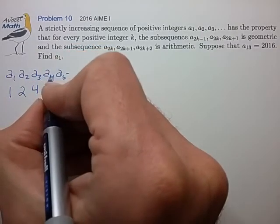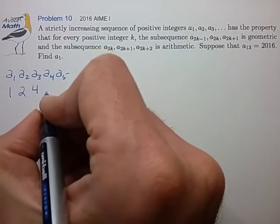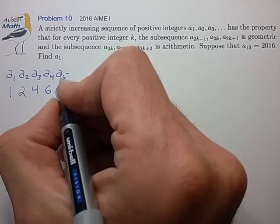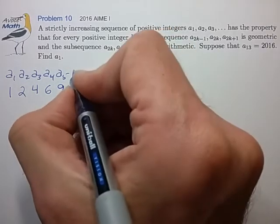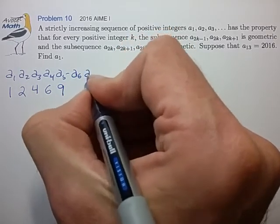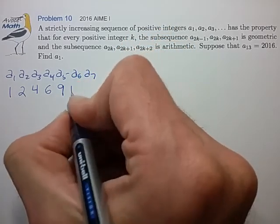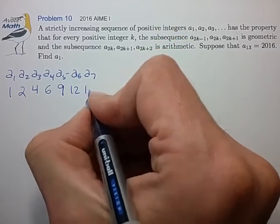And now these next three are arithmetically spaced, so that makes A4 equal to six. These are now geometric. That makes A5 equal to nine. Continuing a little bit further, we can find that A6 is equal to 12 and A7 is equal to 16.